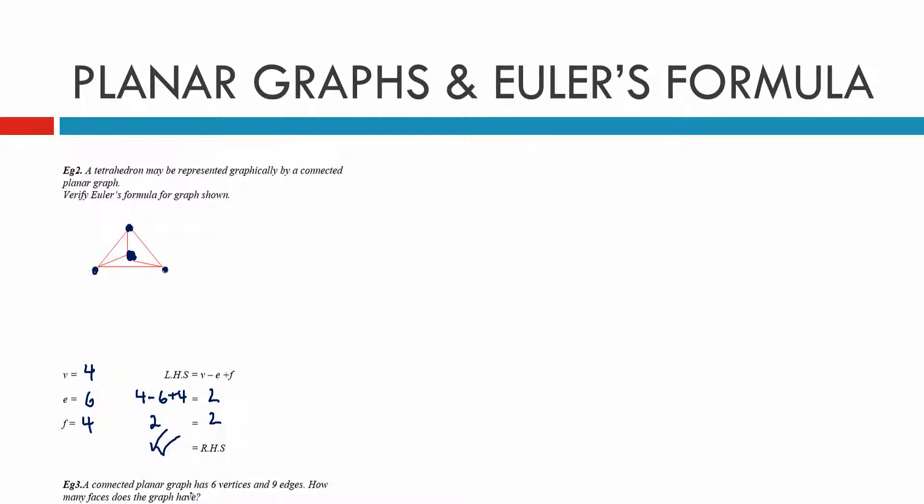Example 3 says a connected planar graph has 6 vertices, 9 edges. How many faces does the graph have? Now it tells us it's a connected planar graph. So as soon as it tells us that, it means that we can use Euler's rule. So we'll write down Euler's rule. V minus E plus F equals 2.